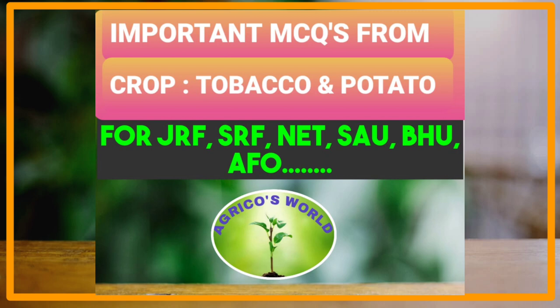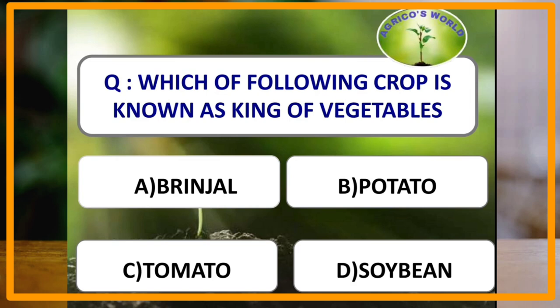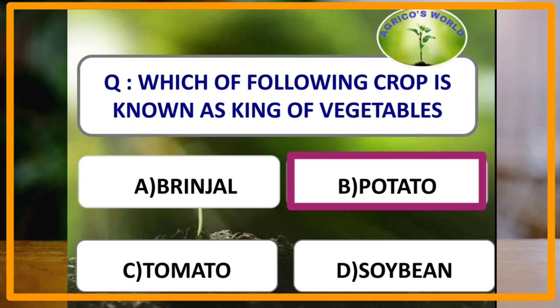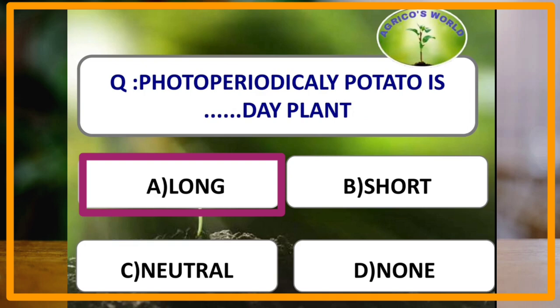Our first question: which of the following crops is known as king of vegetables? Potato is the crop known as king of vegetables. Photoperiodically, potato is a long-day plant, as it requires more than 12 hours of sunshine for its normal growth and development.